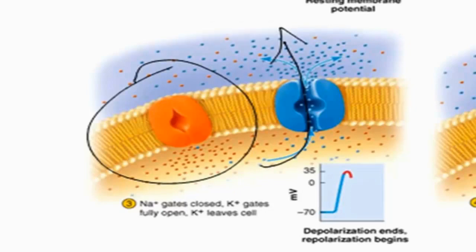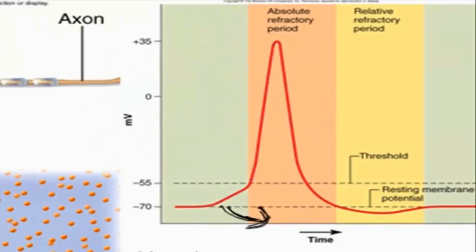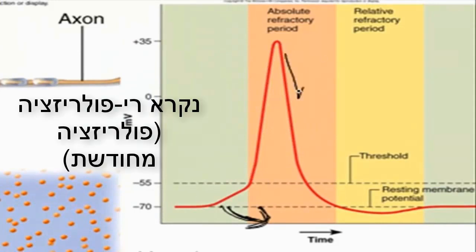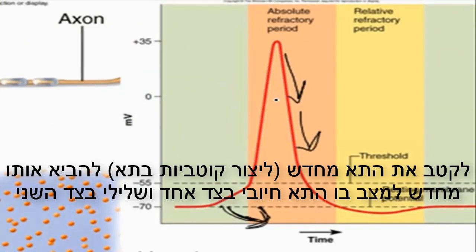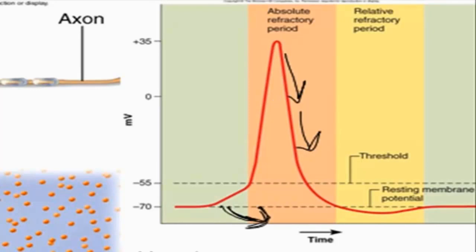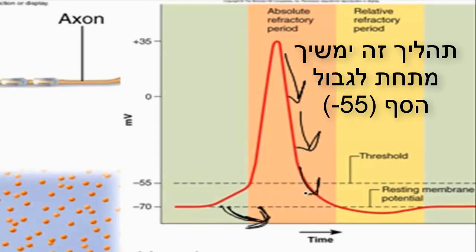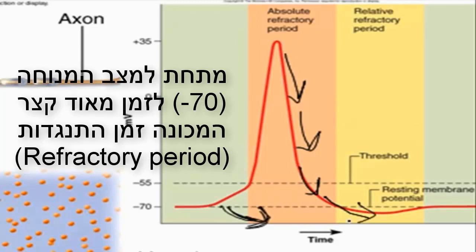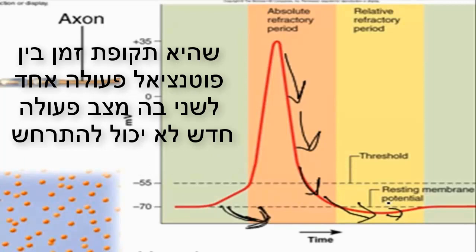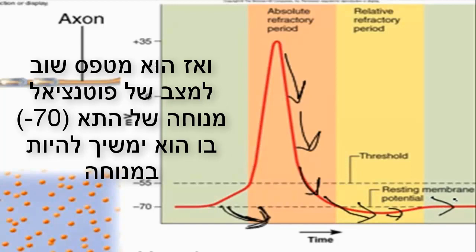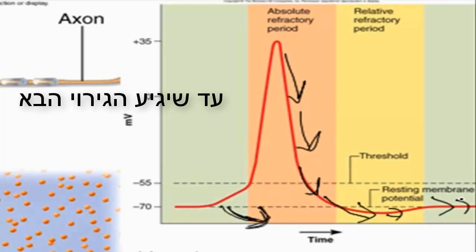This is called repolarization — repolarizing the cell by bringing it back to a state where it's positive on one side and negative on the other. It's going to continue below threshold, below resting potential for a very short time called the refractory period — a period between action potentials during which another action potential cannot be fired — and then return to resting membrane potential, where it will remain at rest until the next stimulus comes along.